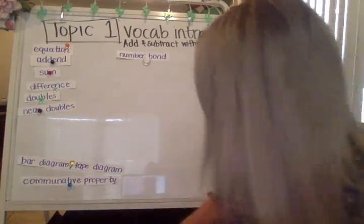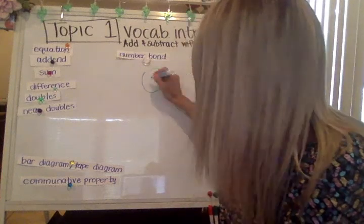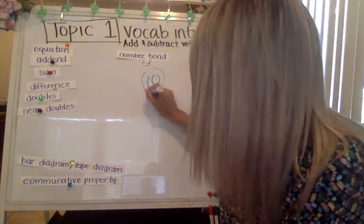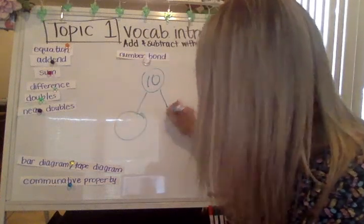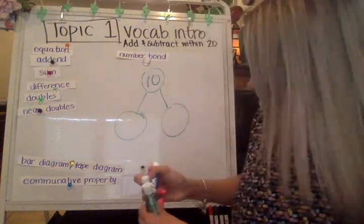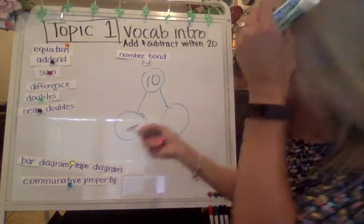Let's say this top number is 10. What if I only knew that one side was nine?